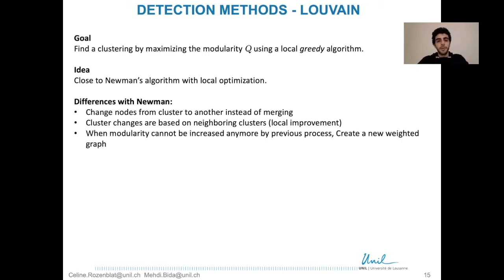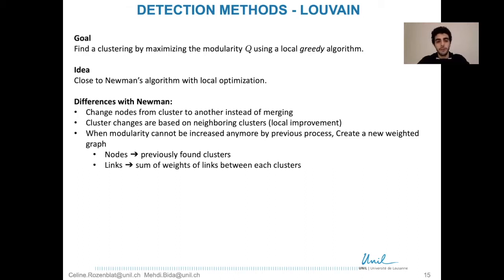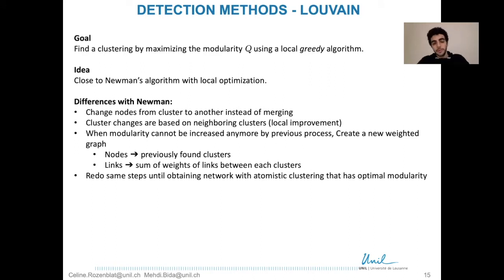Once the modularity cannot be increased anymore, we create a new weighted graph — this is the supplementary step. In this new weighted graph, the nodes are the previously found clusters: we fuse all the nodes within a cluster into one new node. The links are the sum of the weights of the links between each cluster. We repeat this step again and again until we reach an atomistic clustering.